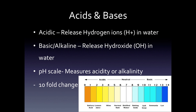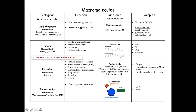Acids and bases are important for the AP Bio exam. When something is acidic, it releases hydrogen ions in water; when something is basic or alkaline, it releases hydroxide ions in water. The pH scale measures the acidity or alkalinity of a substance, ranging from 0 to 14: 0–6 is acidic, 7 is neutral, and 8–14 is basic. Each number on the scale represents a tenfold change — for example, a pH of 4 versus a pH of 5 is a tenfold difference.